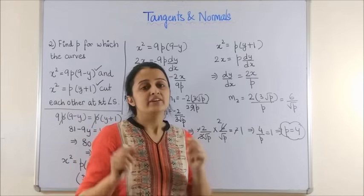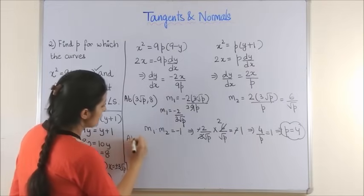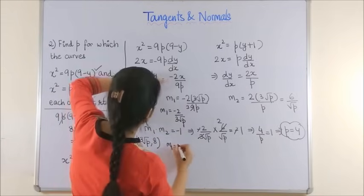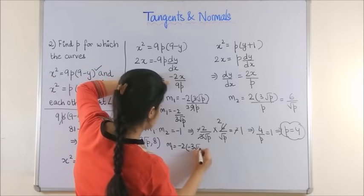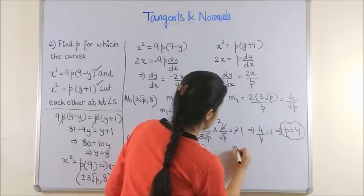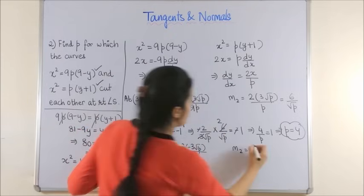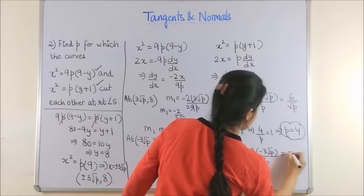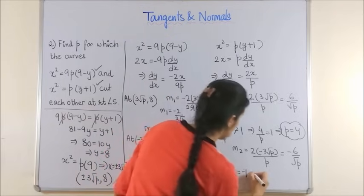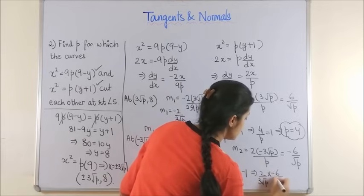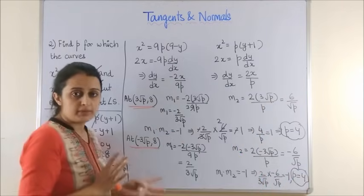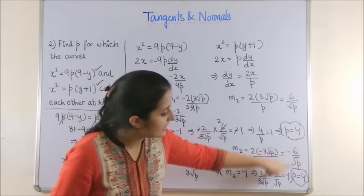We haven't finished yet — we have to find p with respect to the other point as well. At (−3√p, 8): m₁ = −2·(−3√p)/(9p) = 2/(3√p), and m₂ = 2·(−3√p)/p = −6/√p. Using m₁ · m₂ = −1: (2/(3√p)) · (−6/√p) = −1, which again gives p = 4. Please note that whether you use this point or the other one, p = 4 from both cases.